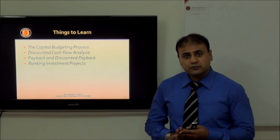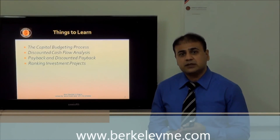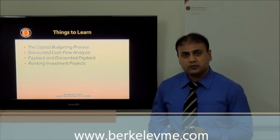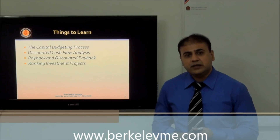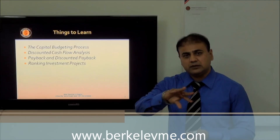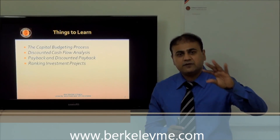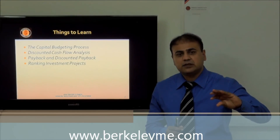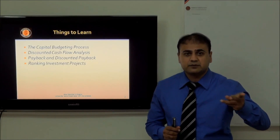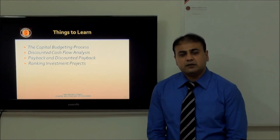The first thing is the capital budgeting process. We should be very clear about what a capital budget is, and then we will learn how to develop it. Generally, the budget has two major categories: operational budgets — which include the sales budget, income budget, direct material, direct labor — and financial budgets, which include the cash budget and capital budgeting.